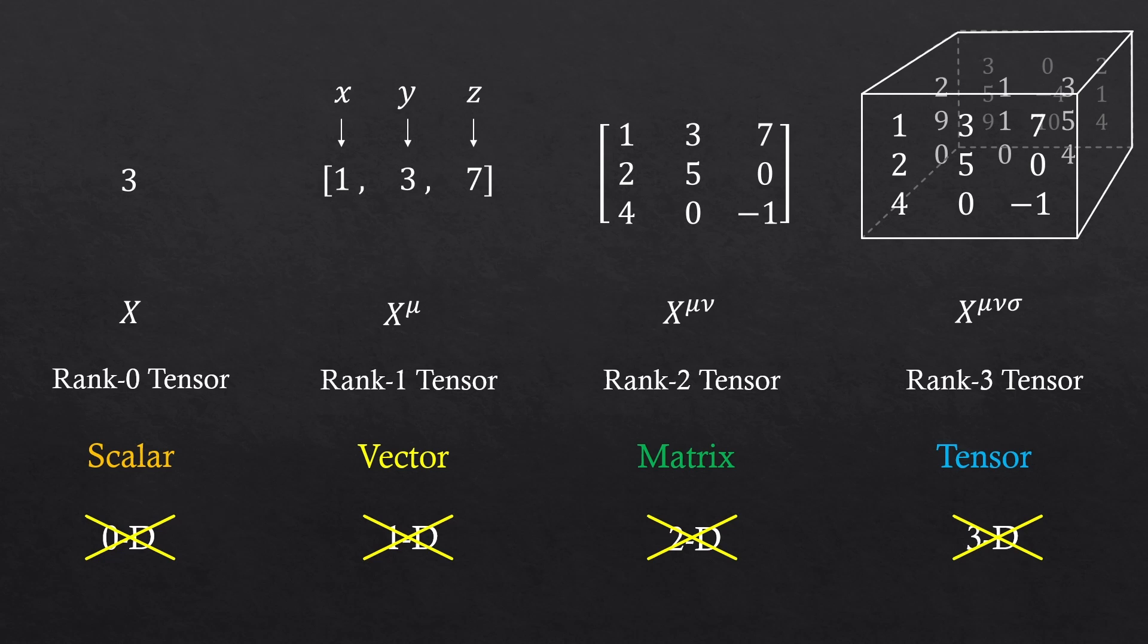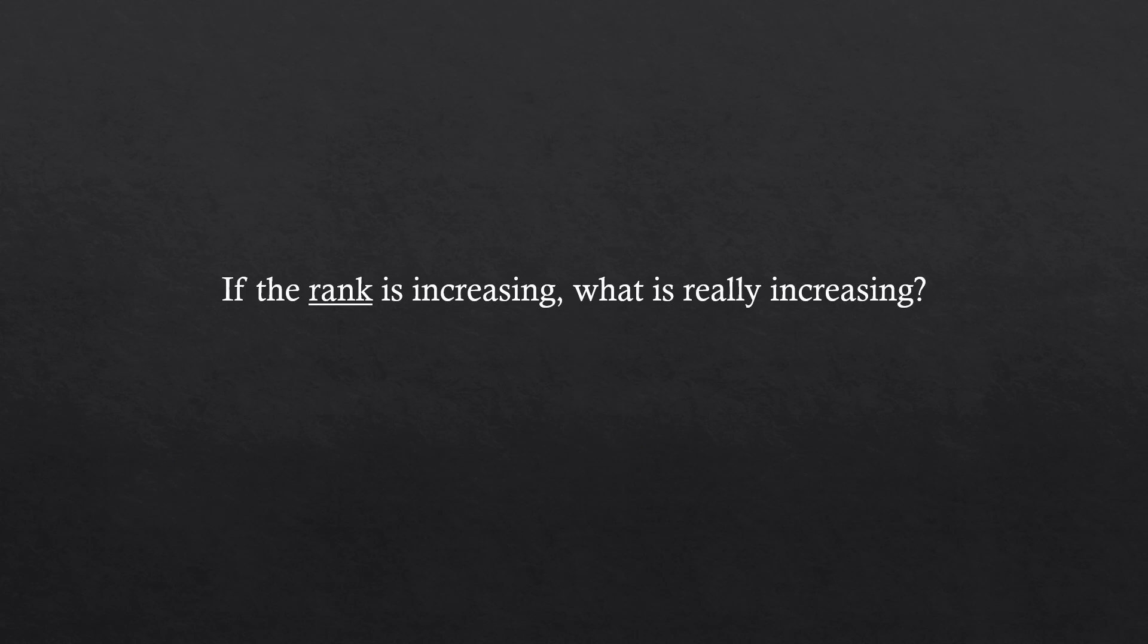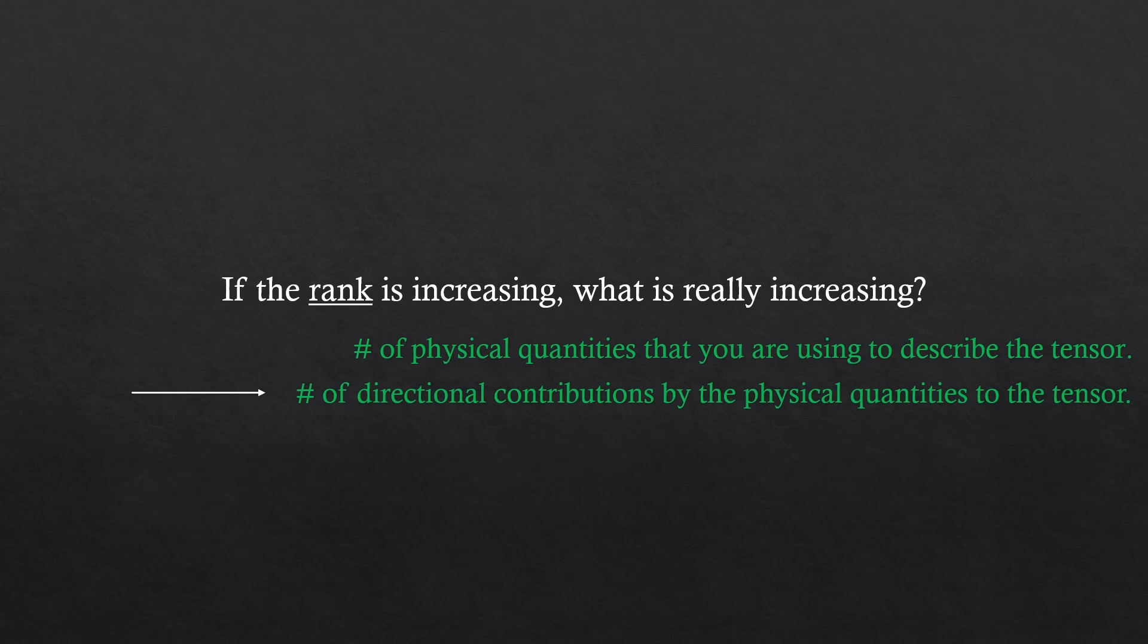Now, back to these ones. Now you can see that these are just all 3D tensors. So, if the rank is increasing, what's really increasing? Not the number of dimensions, but the number of physical quantities that you're using to describe the tensor. To be more precise, the number of directional contributions by the physical quantities is increasing. So, in here, we have force and area, so two directional contributions.